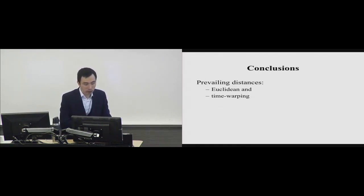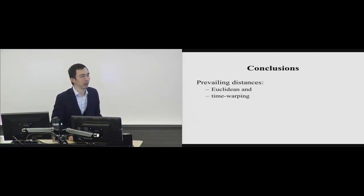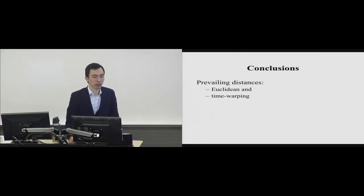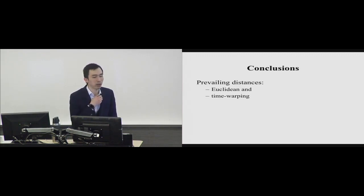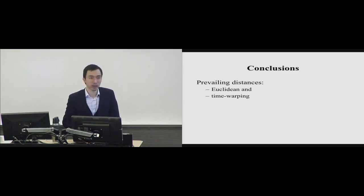So those are two very common distance measures: Euclidean distance, which treats time series as high-dimensional vectors but doesn't account for compression or stretching, and dynamic time warping, which takes into account acceleration and deceleration.